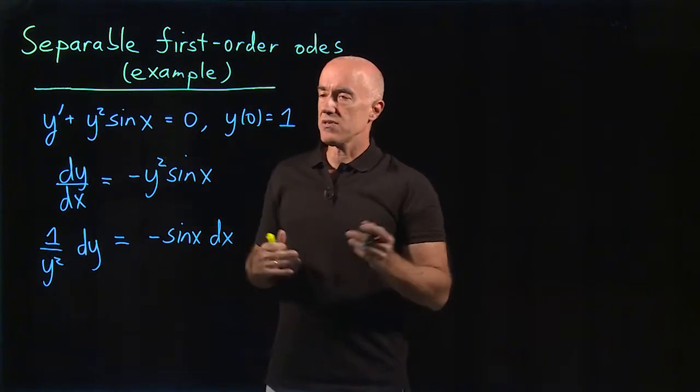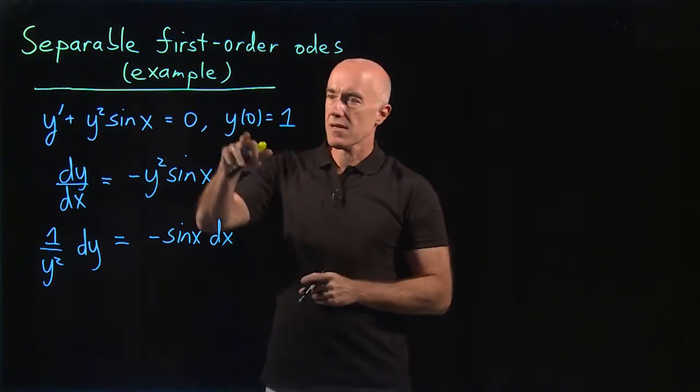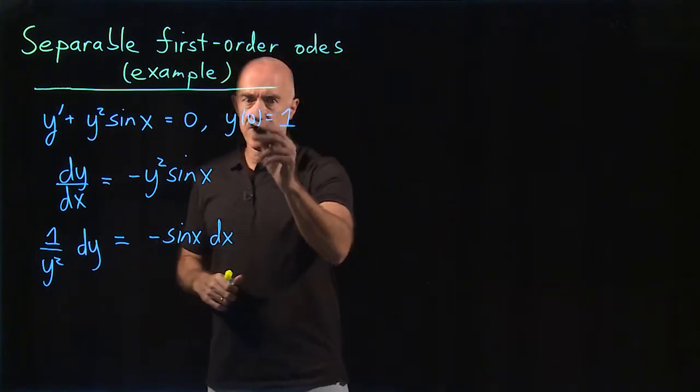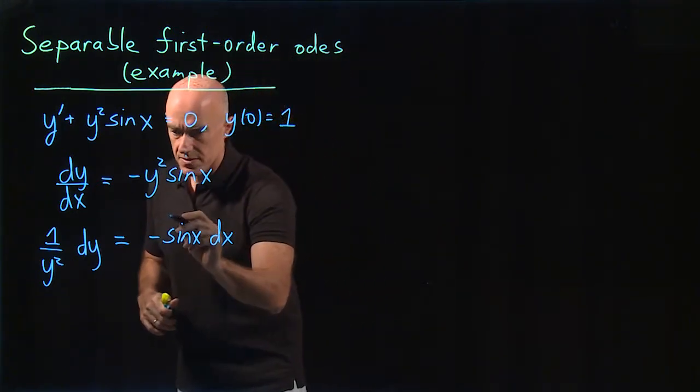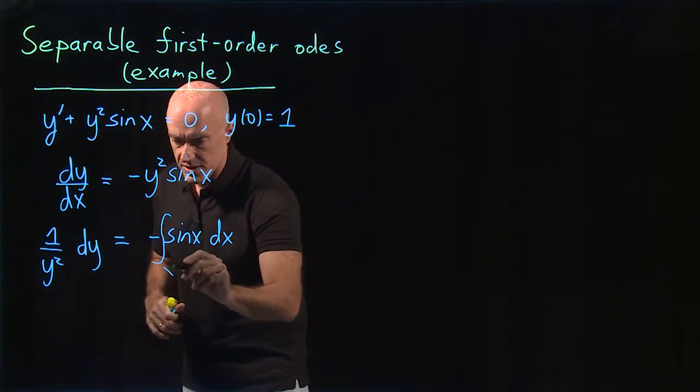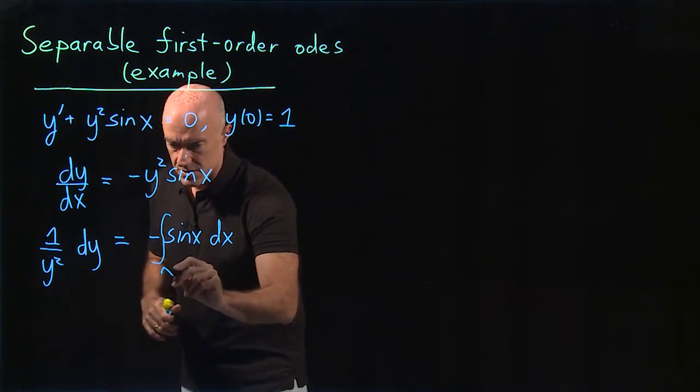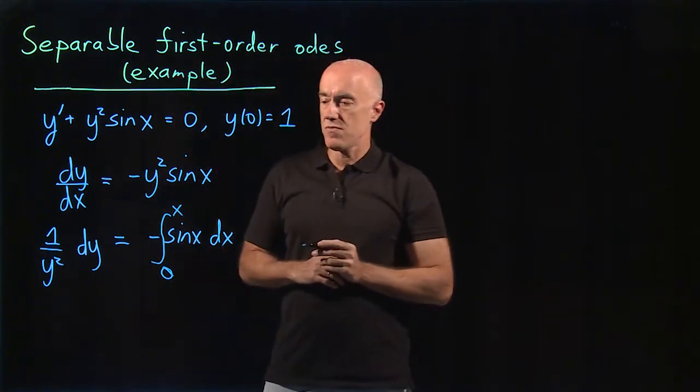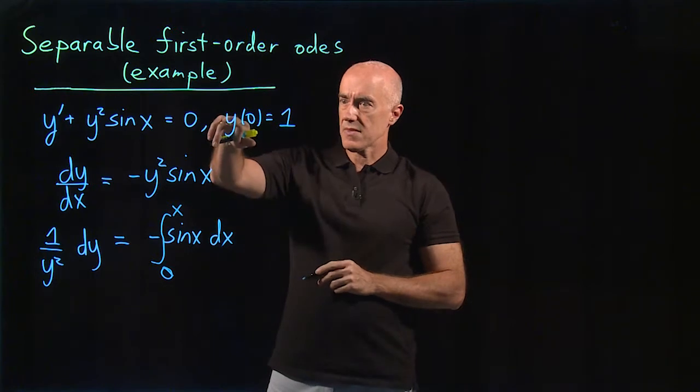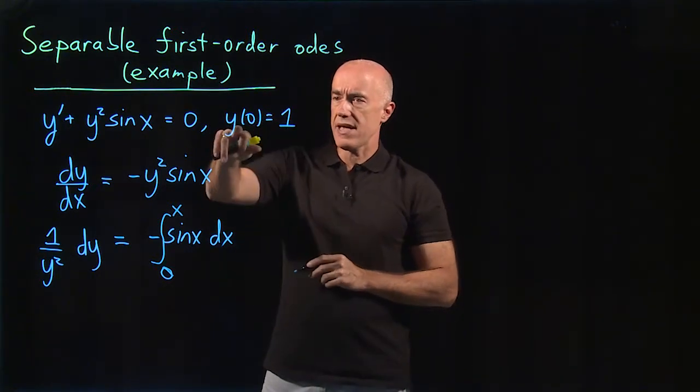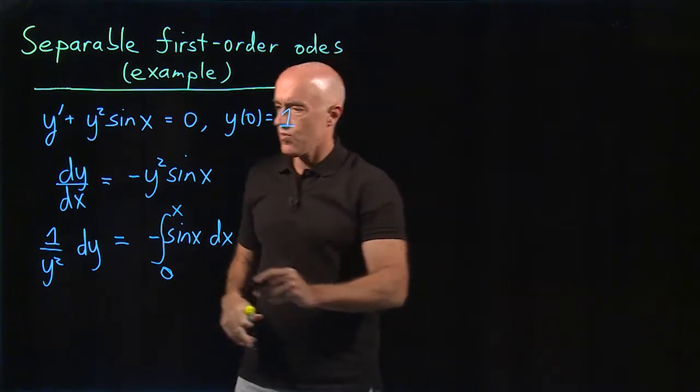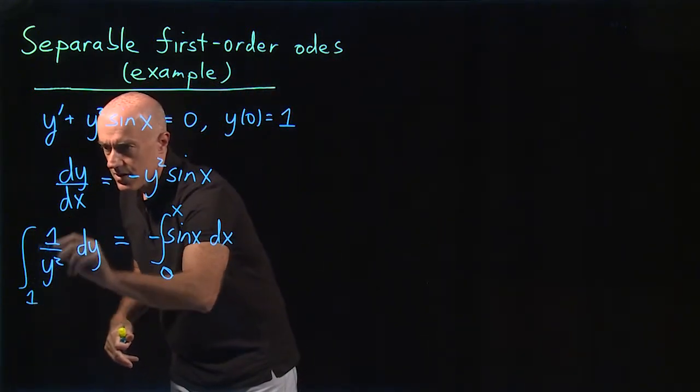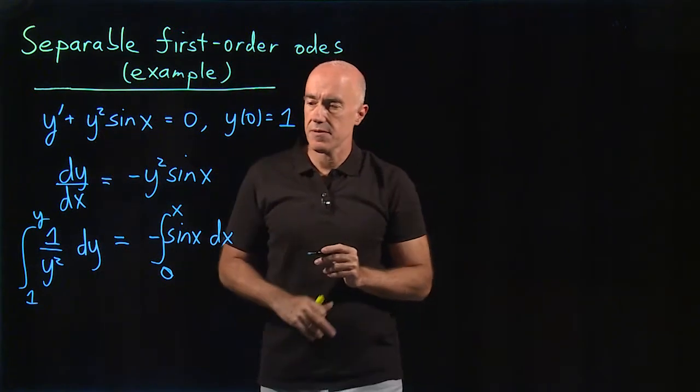Then we integrate. We have to use the initial condition y(0) = 1. We integrate from x = 0 to x. And when x is 0, y equals 1, so this gets integrated from 1 to y. We have these two integrals to do now.